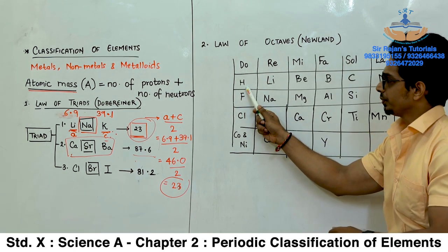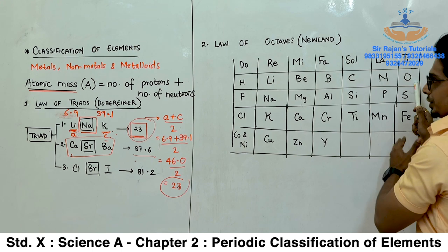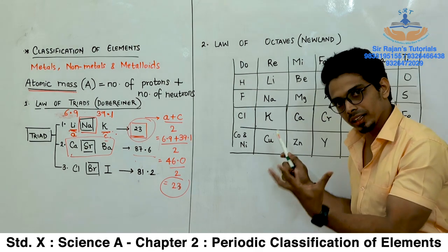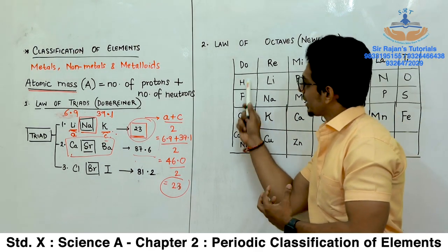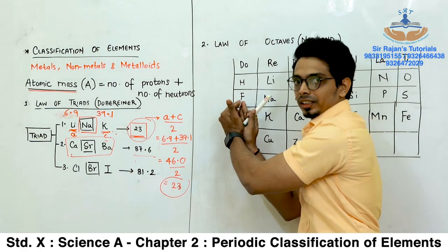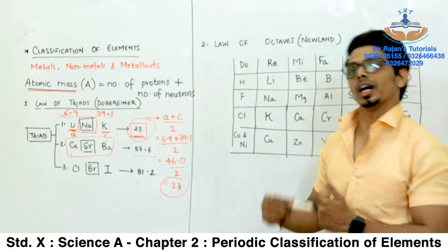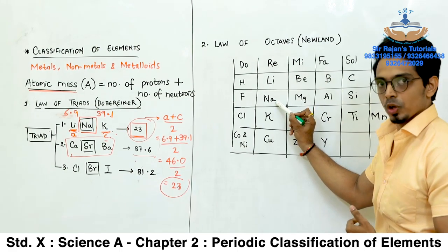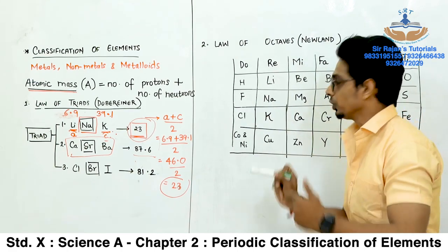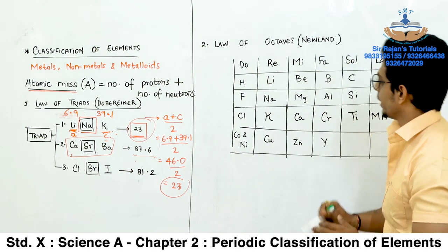The Law of Octaves states that when elements were placed in increasing order of atomic masses, every eighth element had properties similar to the first one. For example, if this is the first element, then the eighth element has properties similar to it. The same is true for sodium, magnesium, aluminium, and so on. But this was restricted only up to calcium and did not work further. The second disadvantage: cobalt and nickel were placed in the same space or under the same note, but no two elements can occupy the same space.